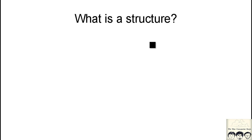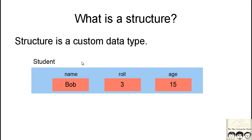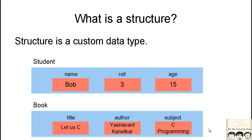A structure is basically a custom data type. In the past we studied primitive data types like int, float, double, and char. A structure can be considered a secondary or custom data type. For example, a structure for students contains name, role number, and age. If I want to go further, say I want to create a structure for a book — it will contain three things: title, author, and subject, which you can fill with their respective values.